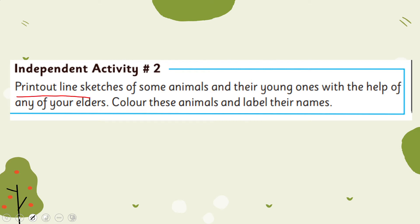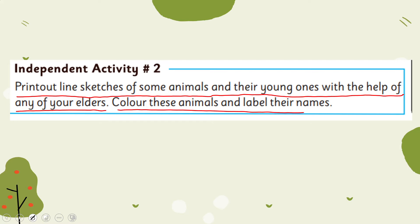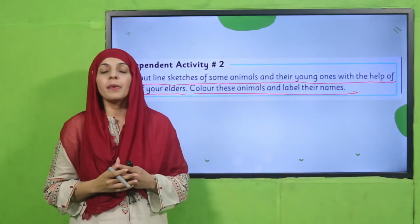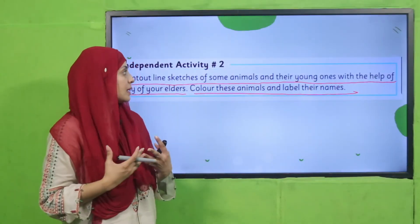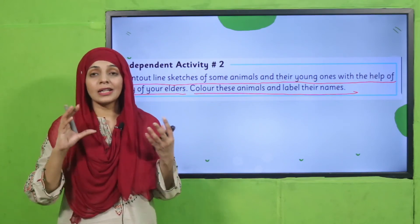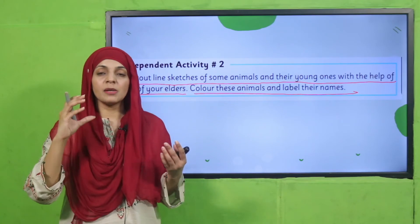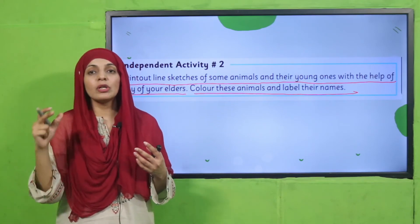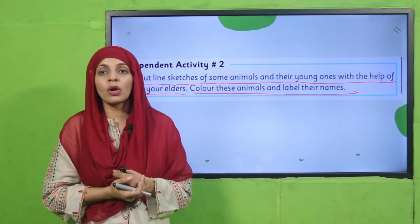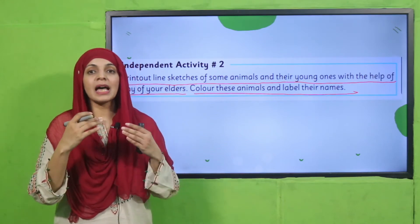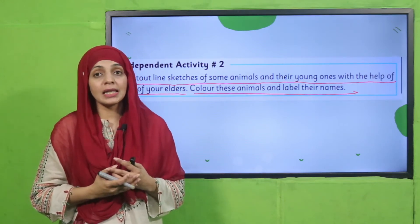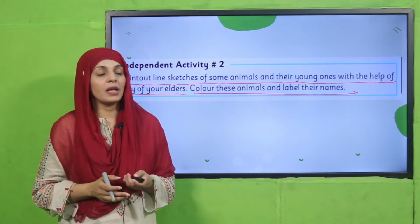Print out or draw sketches of some animals and their young ones with the help of an elder, color these animals, and label their names. At home, with the help of an elder, draw the animal and its baby, join the lines, and color them. The young ones can be differentiated by height and size, and then you also have to guess which animal it is.